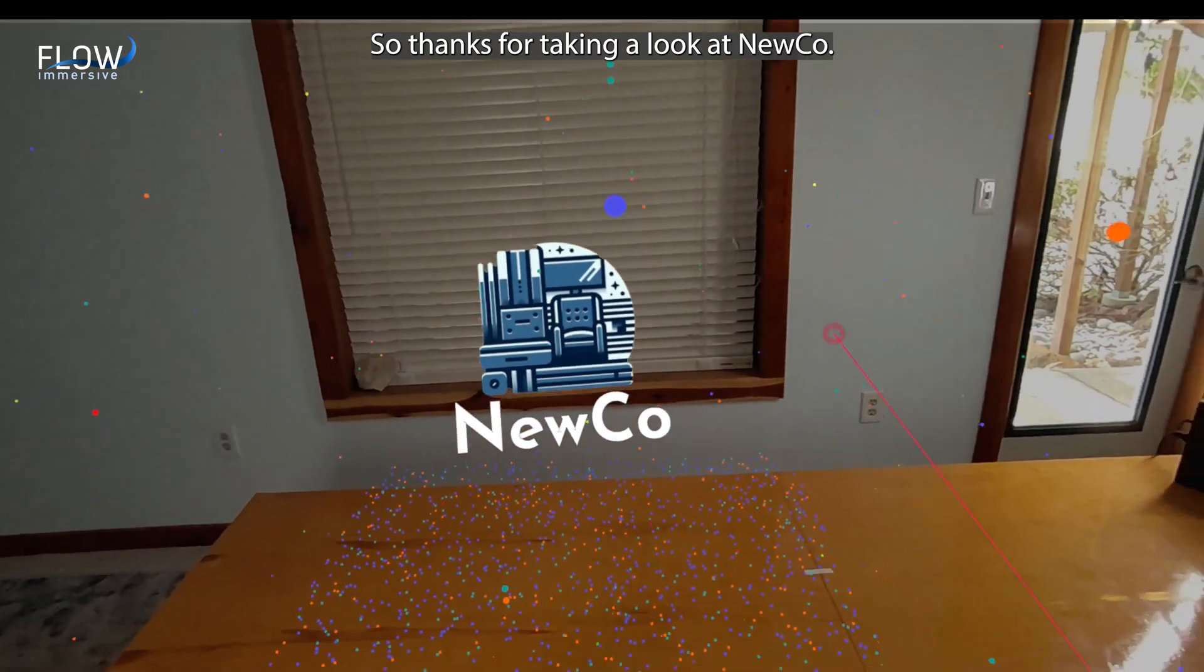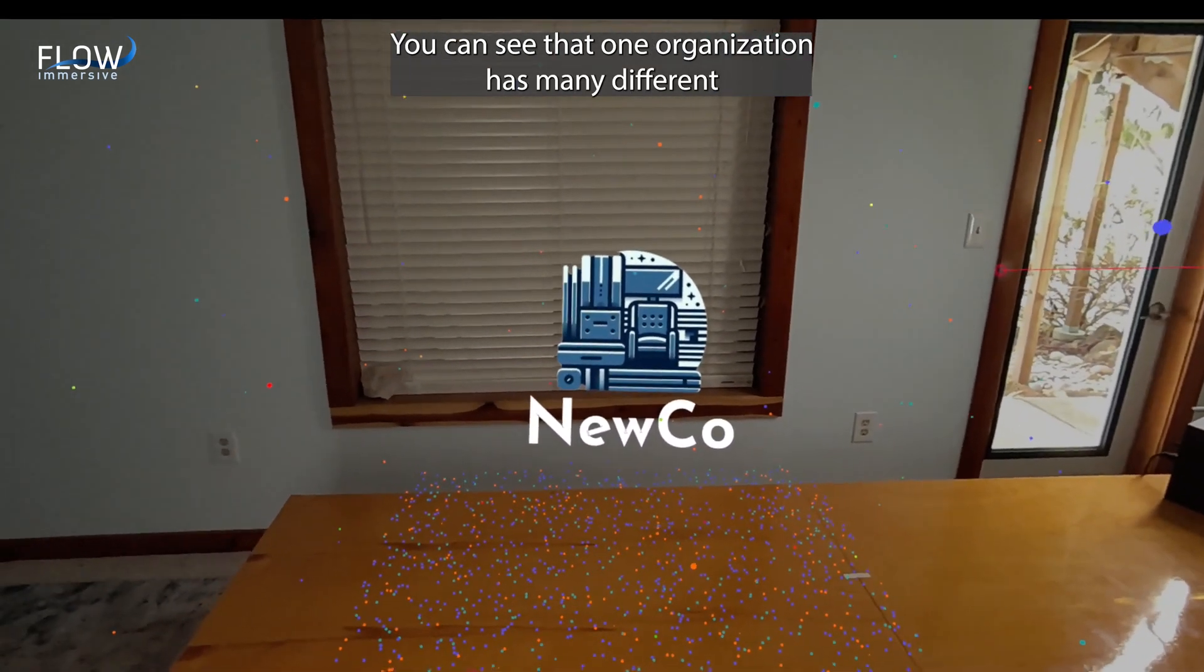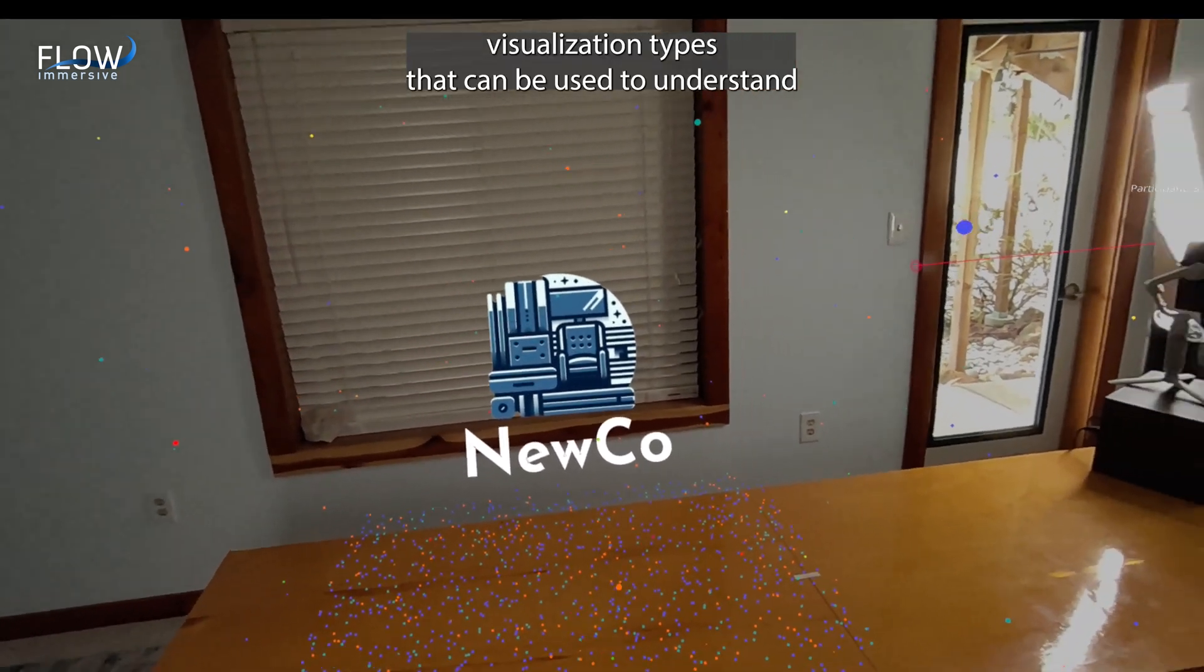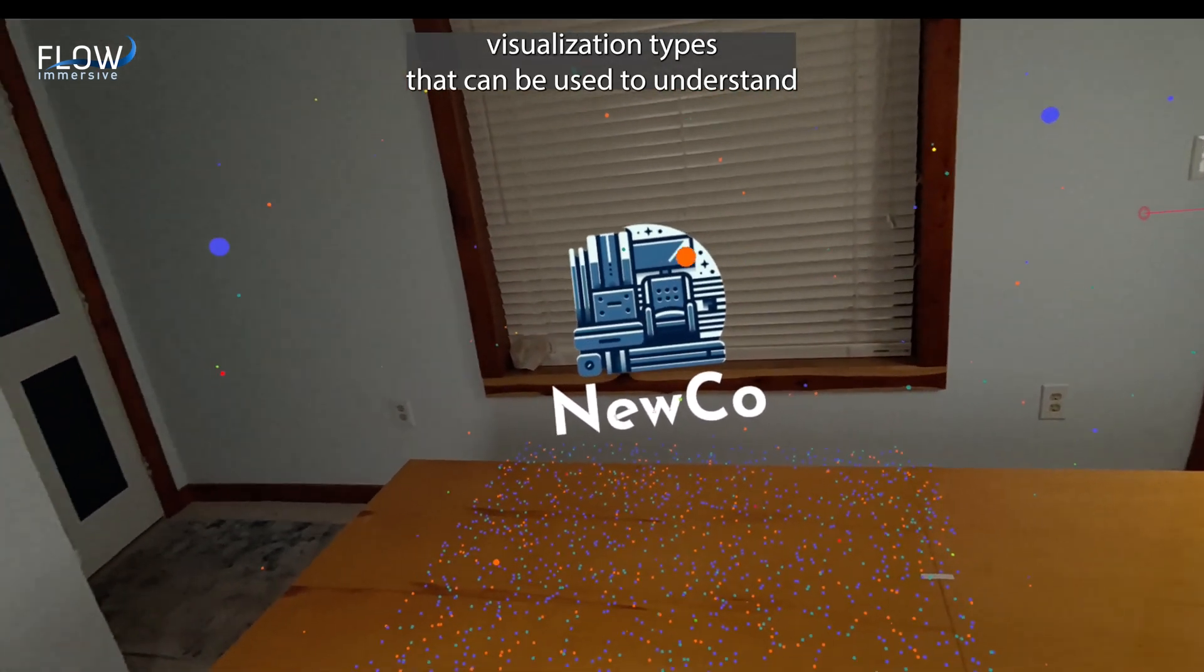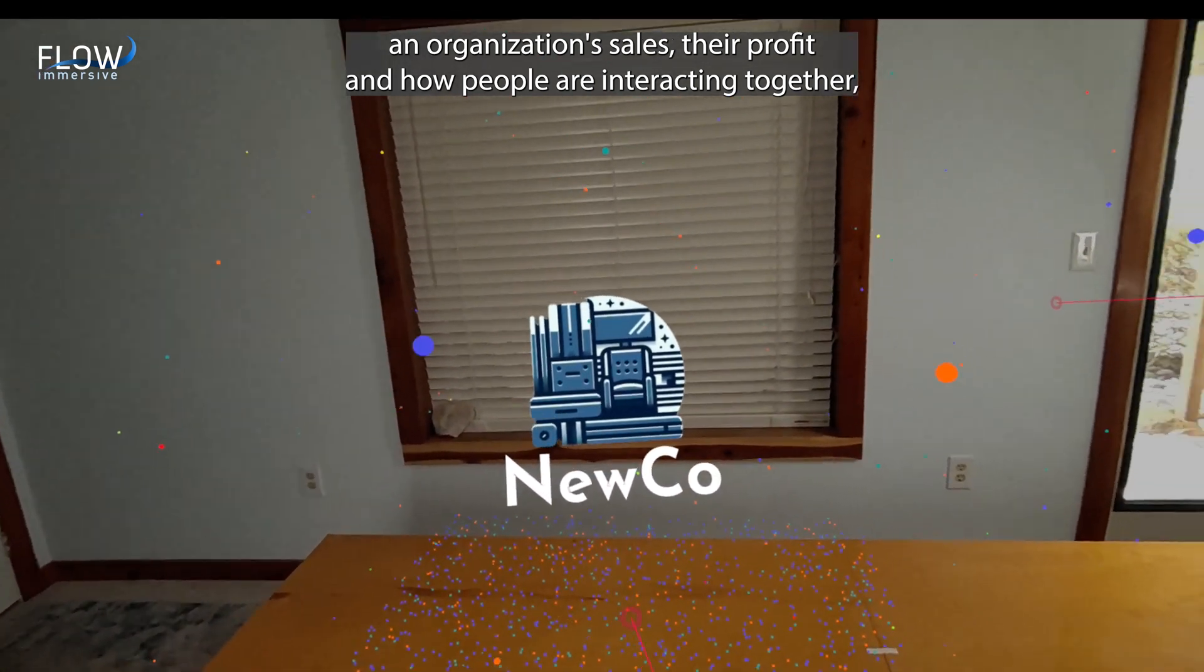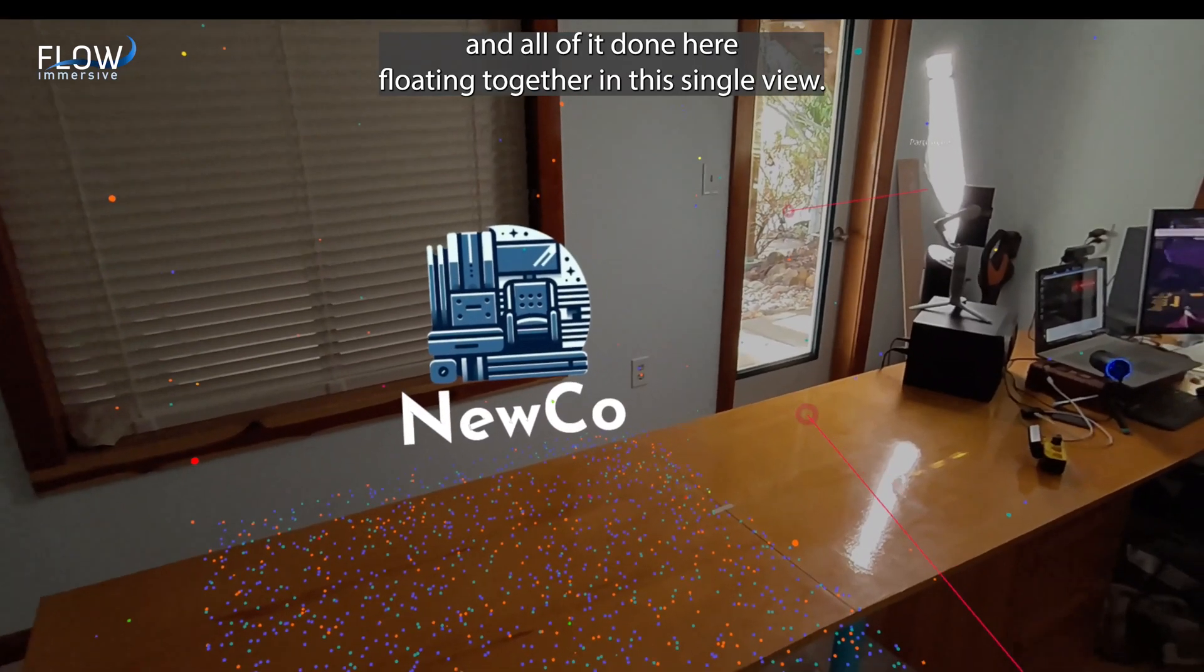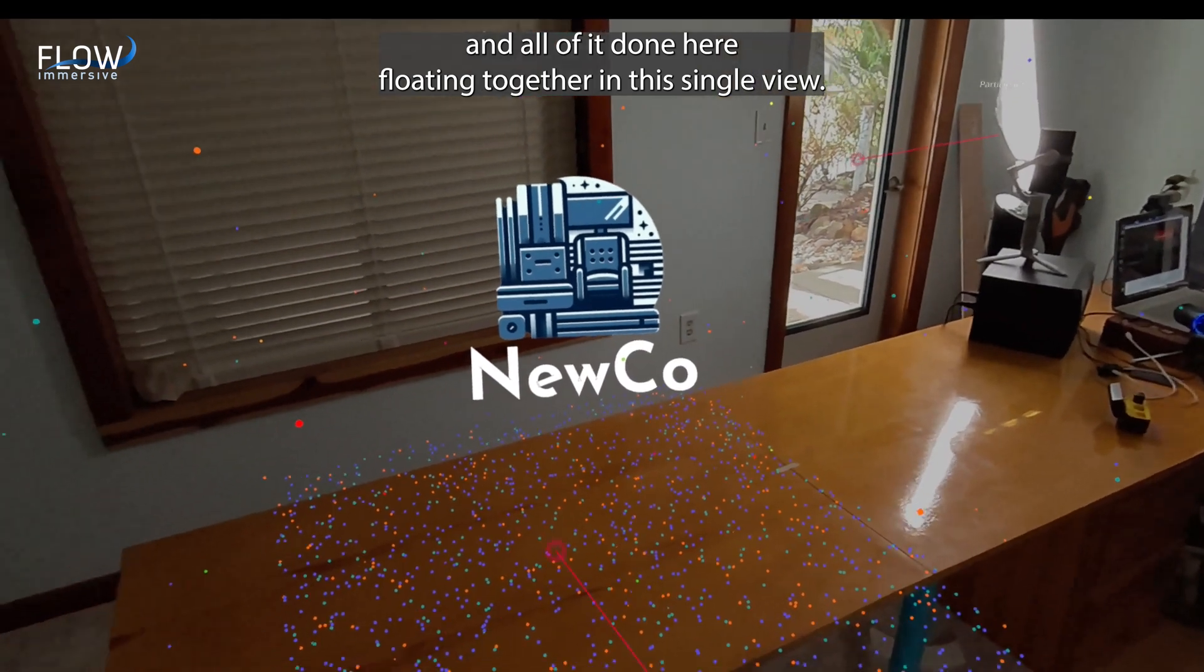So thanks for taking a look at NewCo. You can see that one organization has many different visualization types that can be used to understand an organization's sales, their profit, and how people are interacting together, both across distribution, across time, and all of it done here, floating together in this single view. So thanks for joining us.